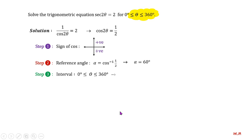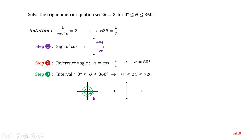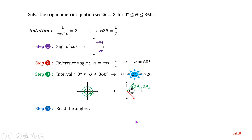We have to find the interval for 2θ by multiplying the inequalities by 2, giving 2θ from 0 to 720 degrees. This means we read the angles counterclockwise in two complete rounds — 2 angles in the first quadrant and another 2 in the fourth quadrant. Remember, we are solving for 2θ. So 2θ₁ = 60 degrees, and 2θ₂ = 60 + 360 = 420 degrees (one full rotation plus the reference angle).